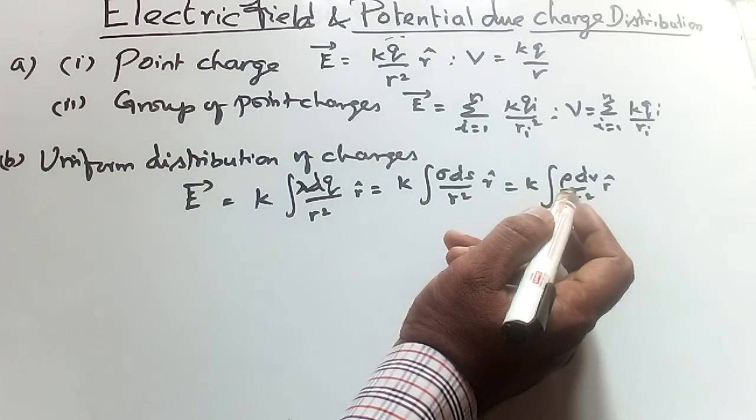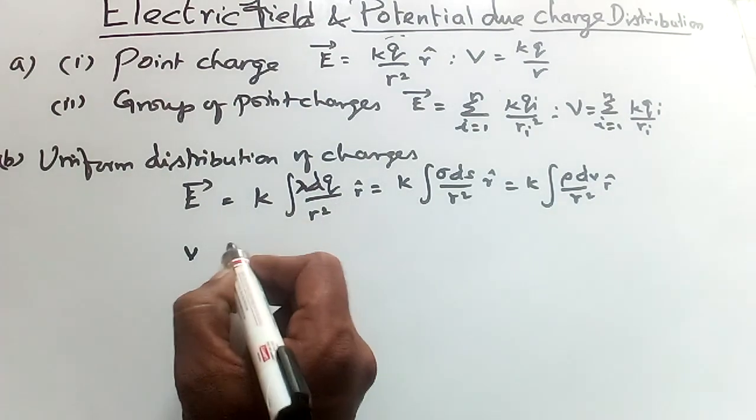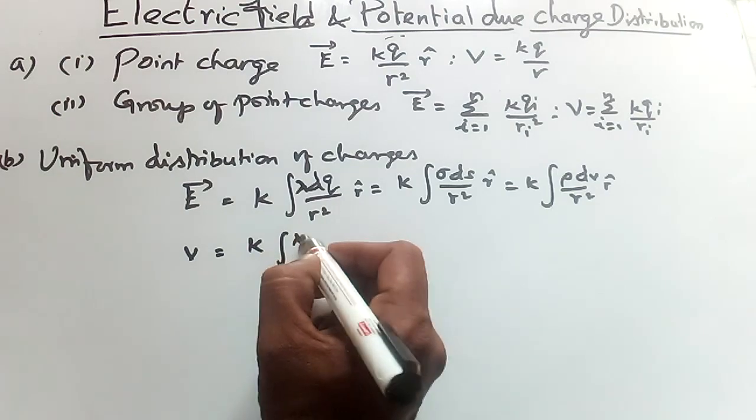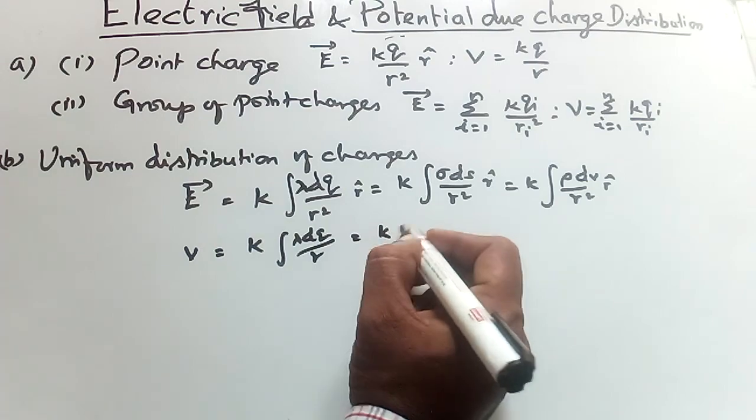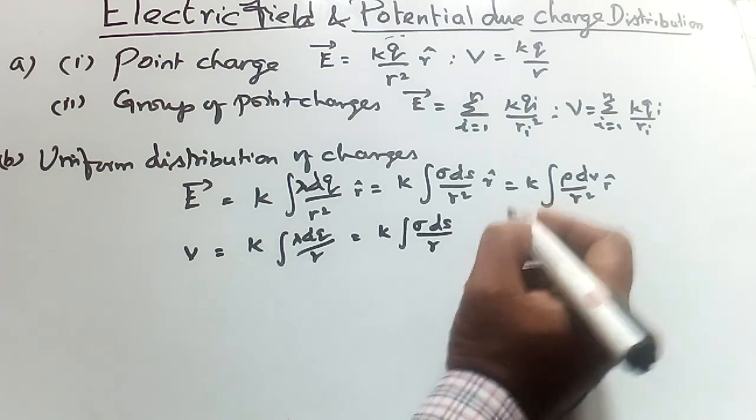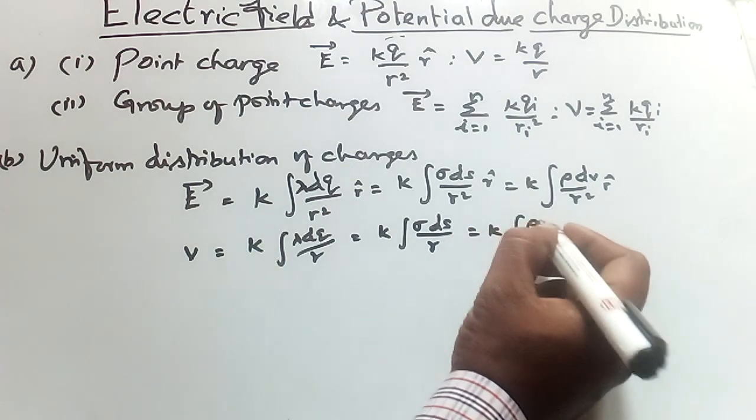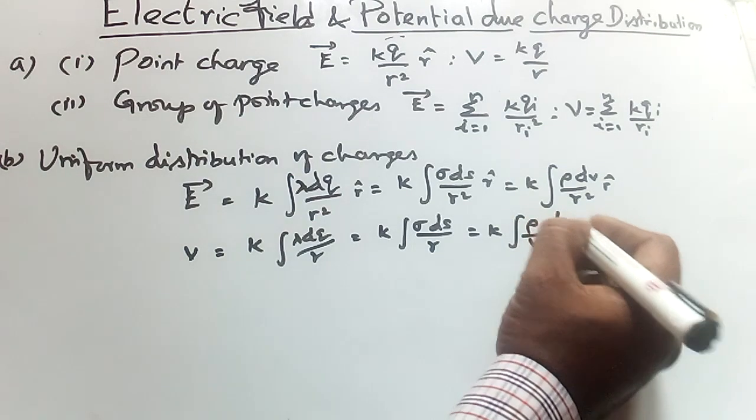And for V, K integral dq by R equals K integral sigma ds by R, equals K integral rho dv by R.